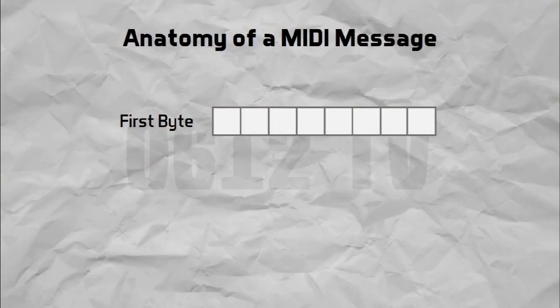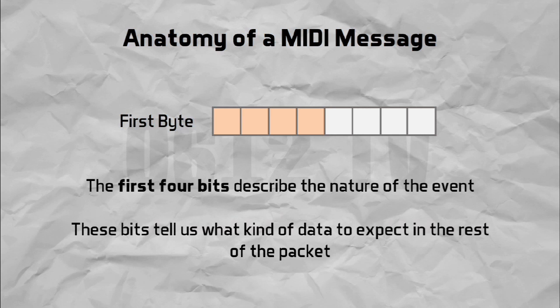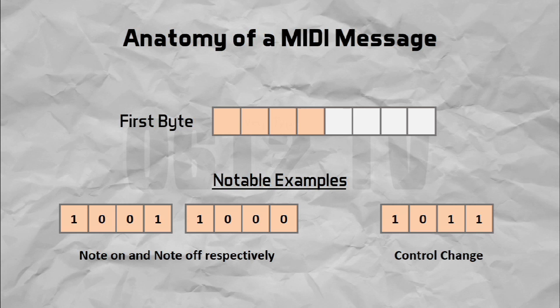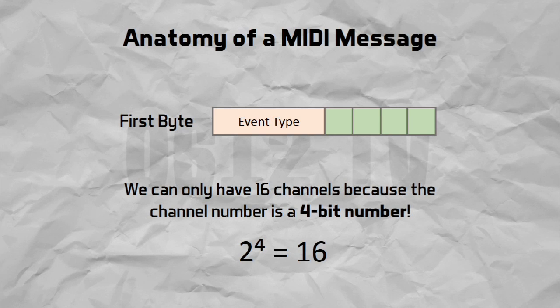What's left to look at now is the anatomy of the MIDI message itself. The vast majority of MIDI messages are actually between 1 and 3 bytes, and when we lay out all the bits and break down the message part by part, you'll see how much sense it actually makes. The first 4 bits actually describe what the event is. Notable examples of events are notes coming on or off, or the change of any controller value. Just by looking at these first 4 bits, we know what to expect in the rest of the packet. For the majority of MIDI messages, the next 4 bits represent the channel, and that is why we can only have 16 channels — because it is a 4-bit number.